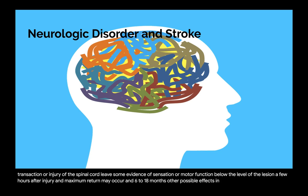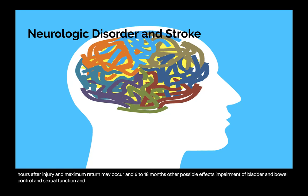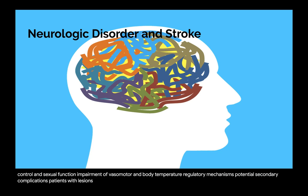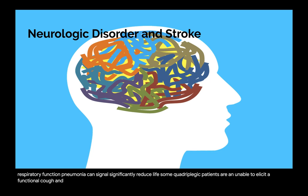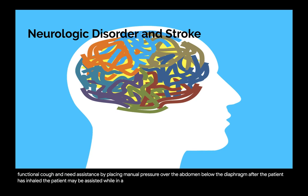Other possible effects include impairment of bladder and bowel control and sexual function, as well as impairment of vasomotor and body temperature regulatory mechanisms. Patients with lesions at or above the T6 level are at greater risk for secondary complications. Impaired respiratory function is one such complication — pneumonia can significantly reduce life expectancy for a person with SCI. Some quadriplegic patients are unable to elicit a functional cough and need assistance by placing manual pressure over the abdomen below the diaphragm after the patient has inhaled.